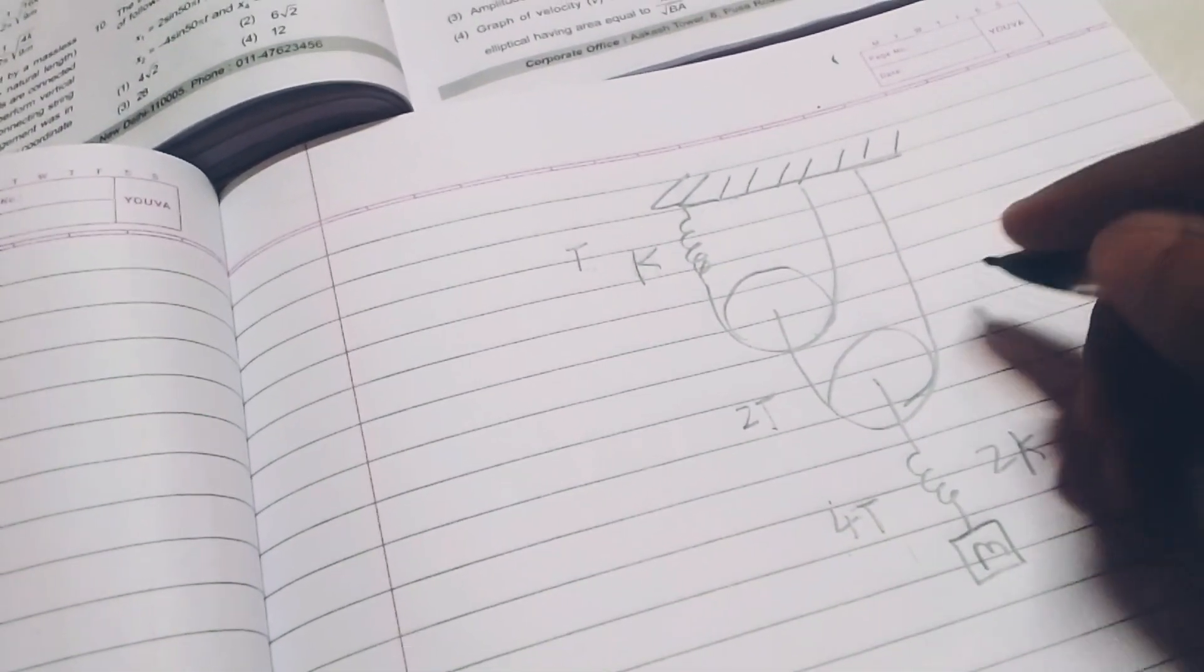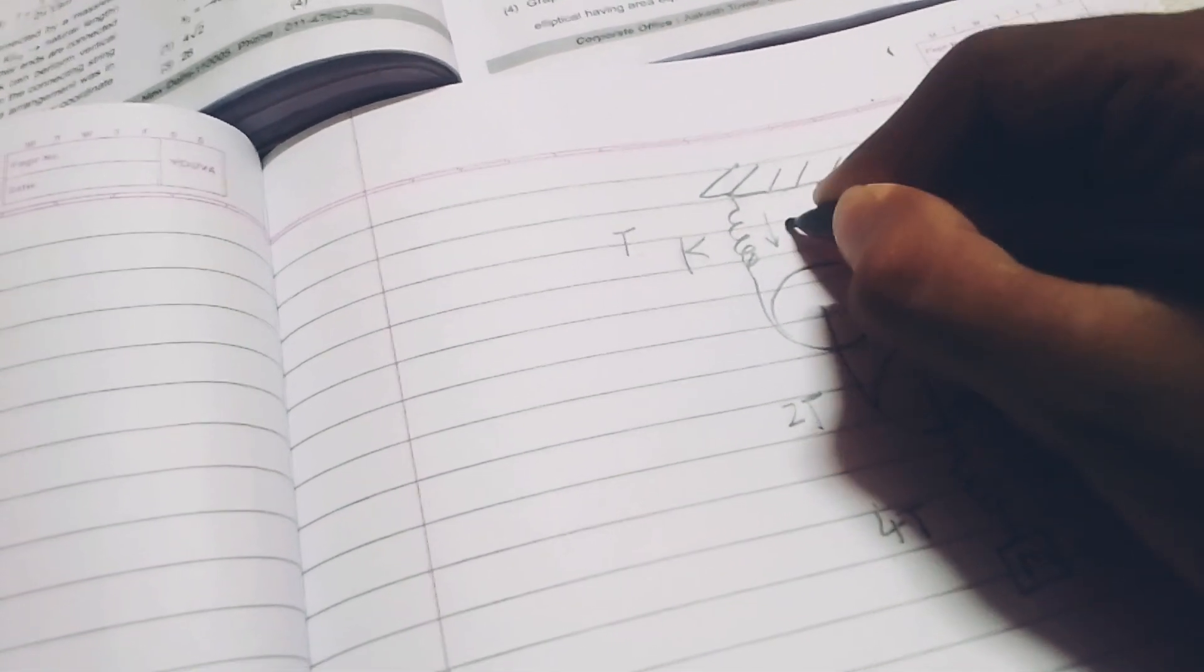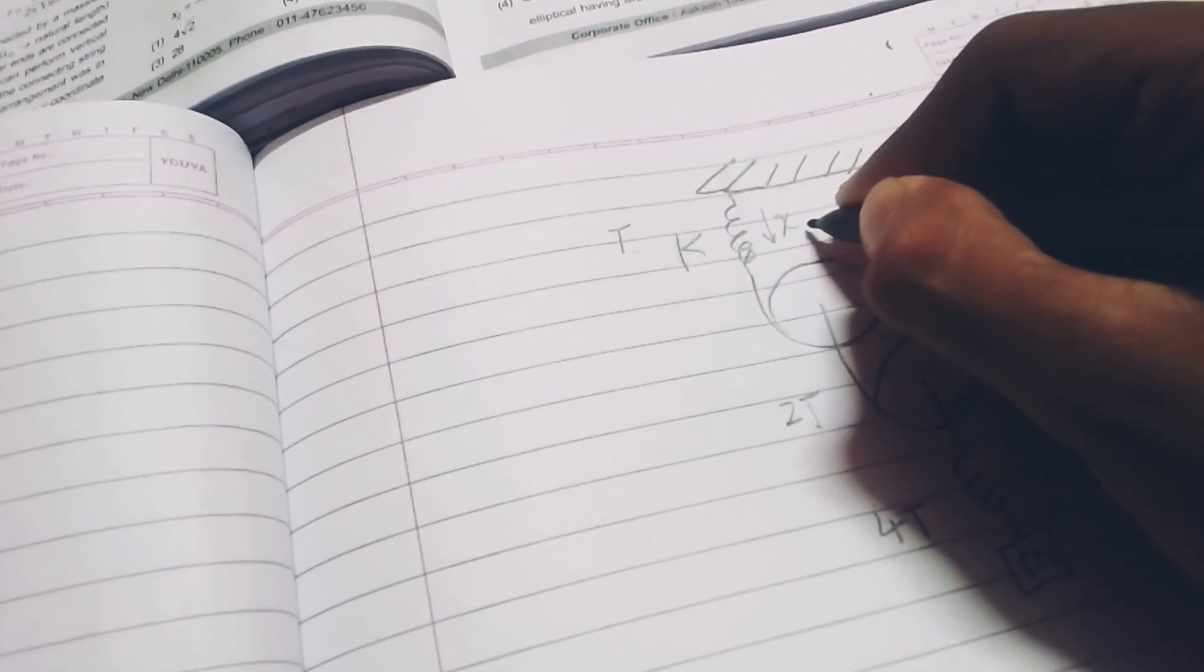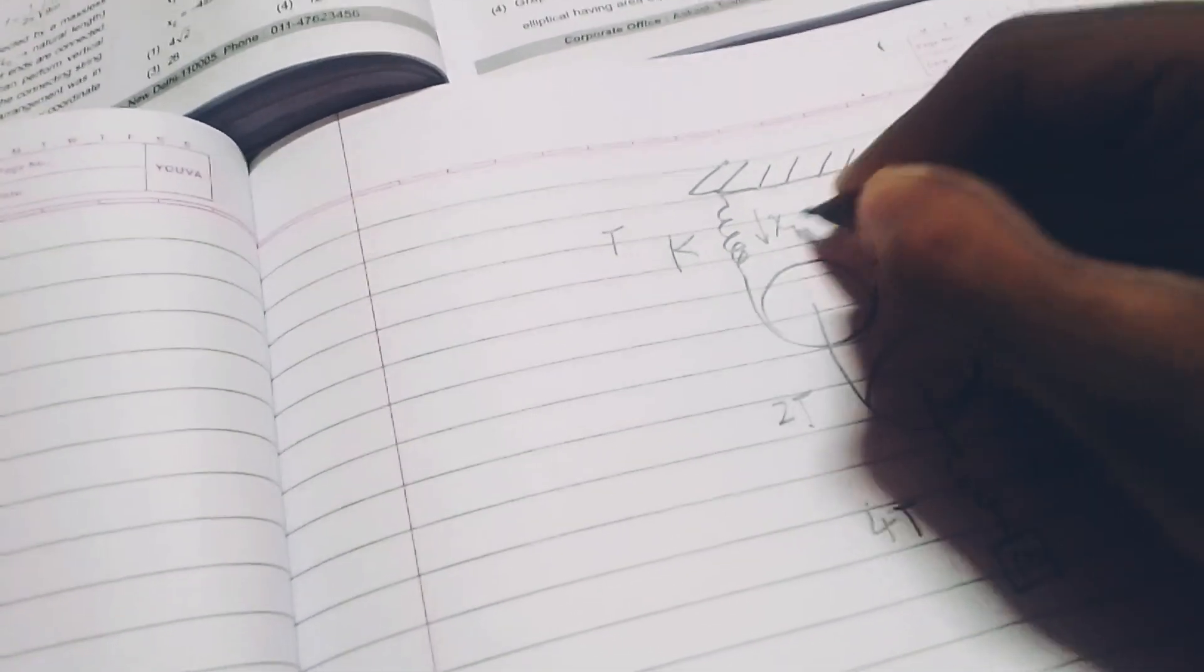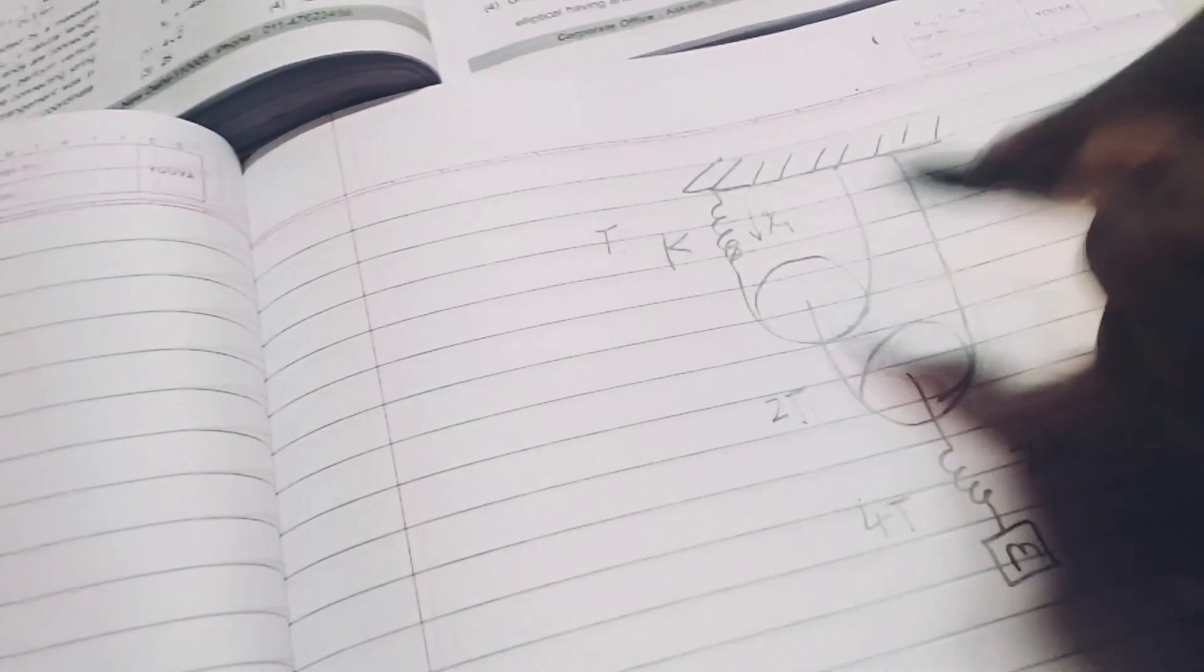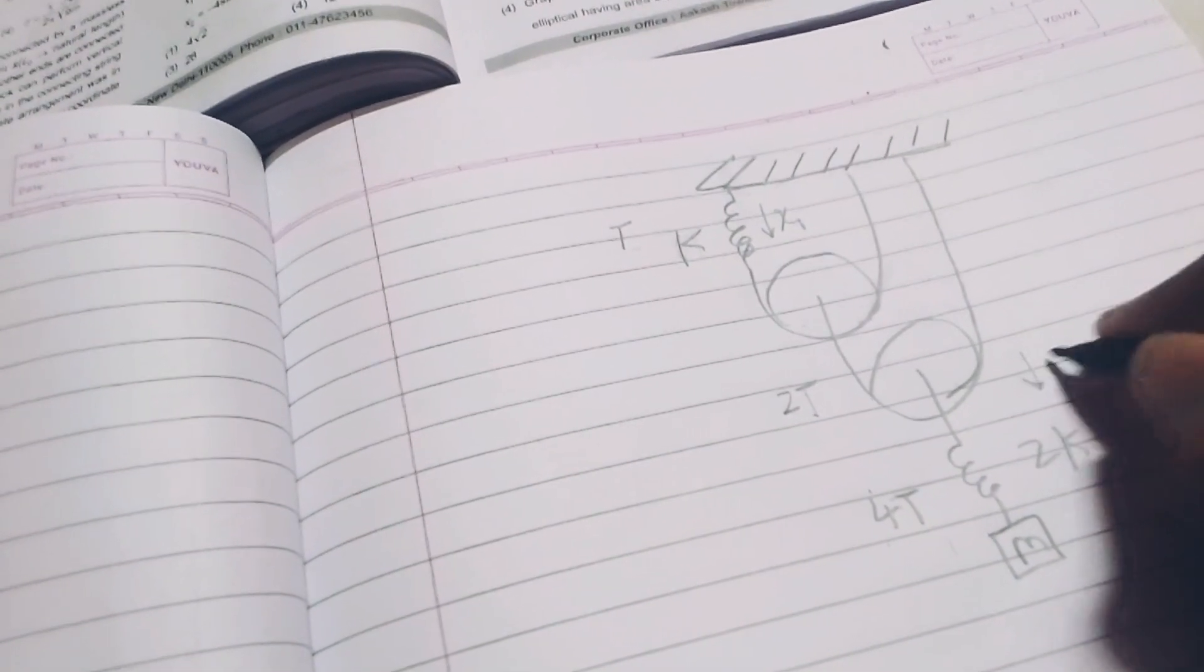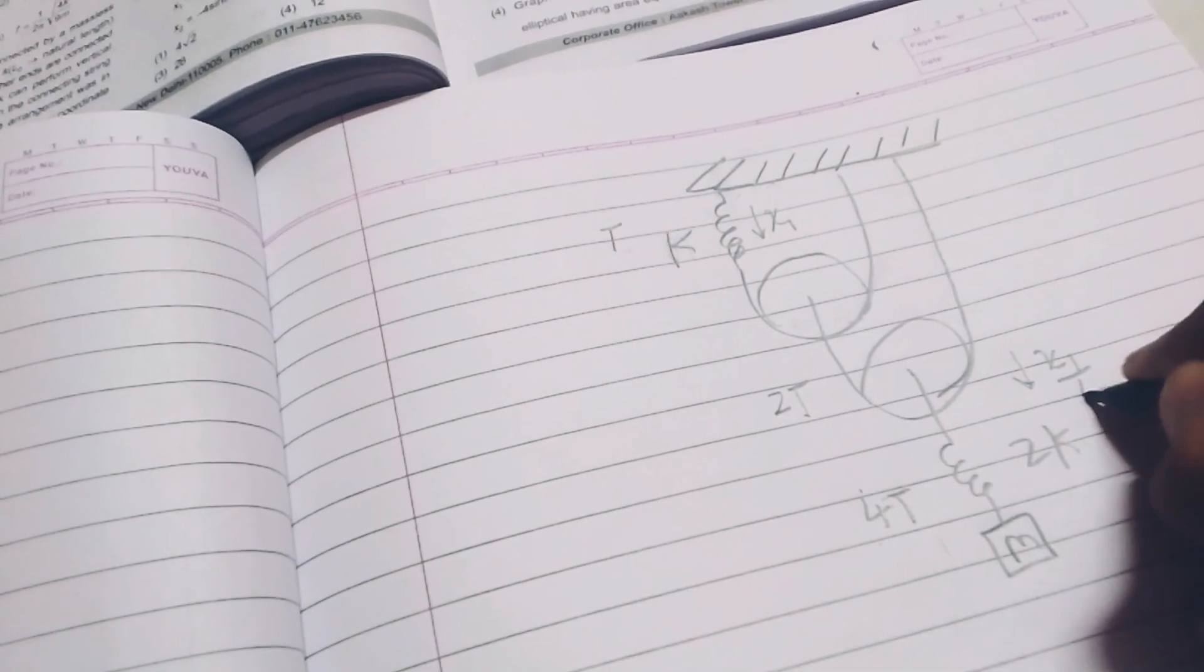Now, here I will assume that this spring comes down by x1. So, this pulley will come down by x1 by 2 and this pulley will come down by x1 by 4.